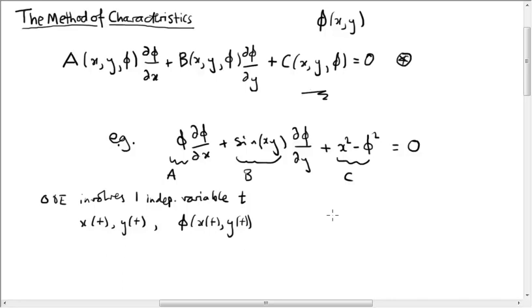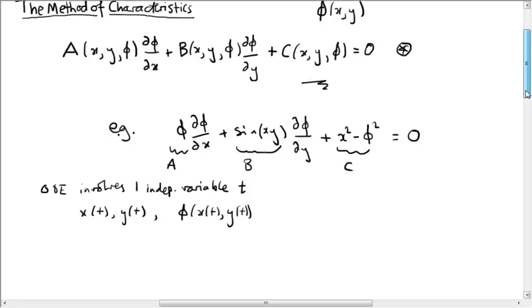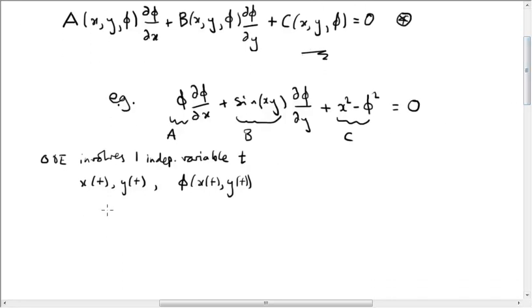And phi will depend on T through its dependence on x and y. Now, having done this, we can differentiate phi with respect to T. In other words, we differentiate phi evaluated at x of T, y of T. And using the chain rule, this gives us x dot times d phi by dx, plus y dot times d phi by dy.